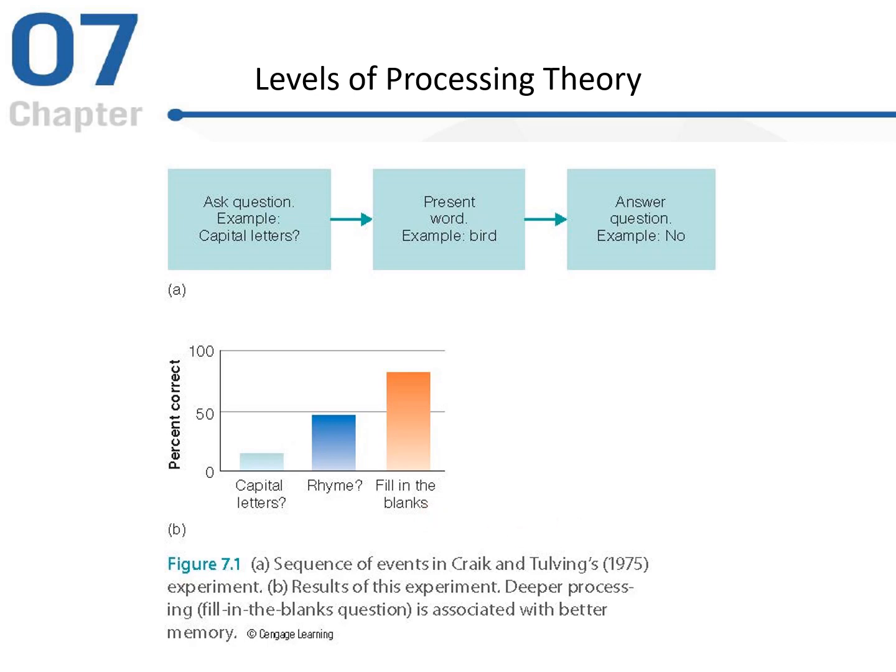According to levels of processing theory, the deeper level of processing would occur with fill in the blanks, rather than with rhyming or capital letters. Later on, after participants participated in each of these different conditions, they were asked to recall the different words they experienced during the task. What they found was that participants in the fill-in-the-blanks category had better memory of what they were presented with, whereas the rhyming and especially the capital letters condition showed really not very good memory. This was taken as some support for the levels of processing theory.